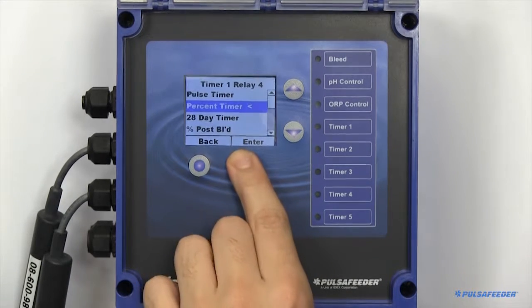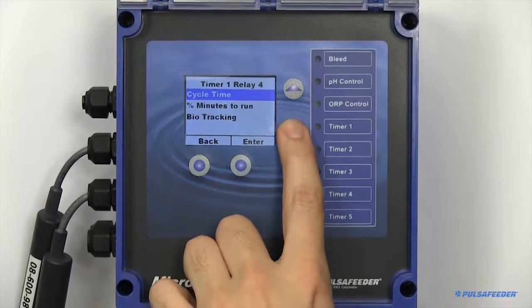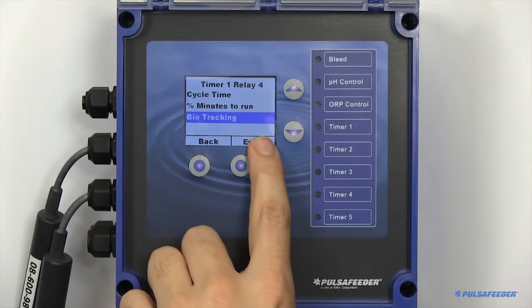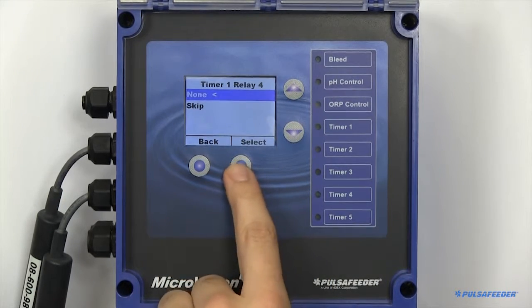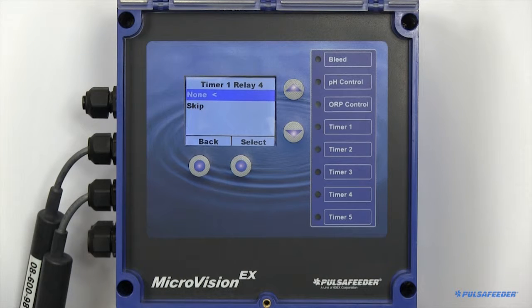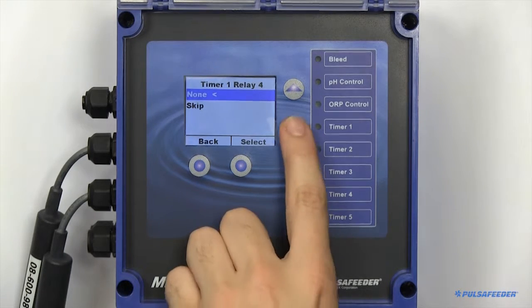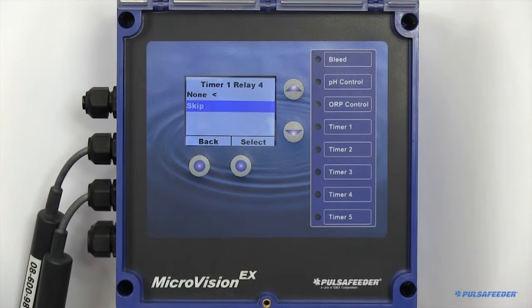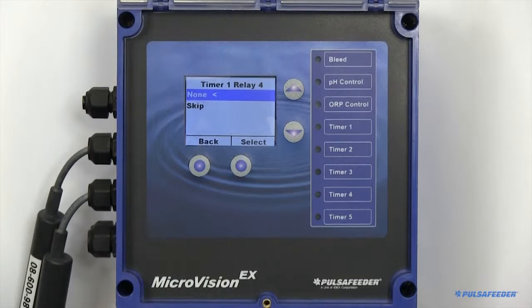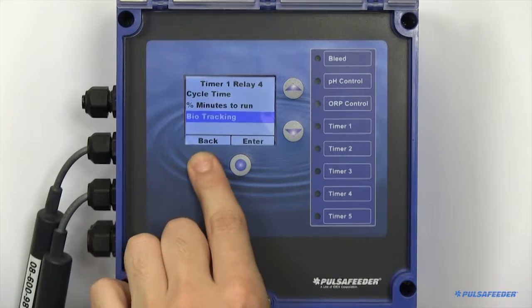All timers also feature a bio-tracking option. From this menu, you can configure how a timer will respond when a 28-day timer's feed time is running. The relay will not turn on if skip is enabled if another 28-day timer feed cycle is running. None will cause the timer to ignore the presence of other 28-day timers.